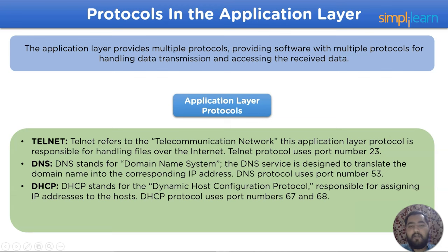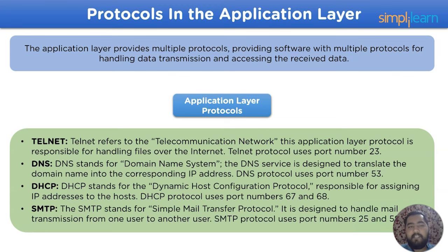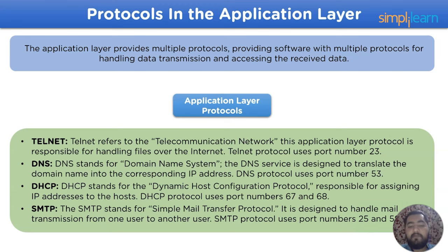The last protocol for the application layer is SMTP. SMTP stands for Simple Mail Transfer Protocol. As the name suggests, this protocol is designed to handle mail transmission from one user to another. The SMTP protocol uses port numbers 25 and 587 over the network model for transmission purposes.